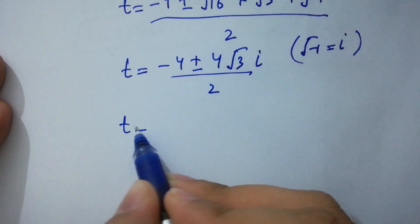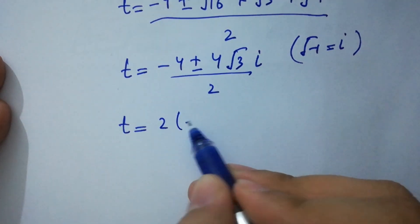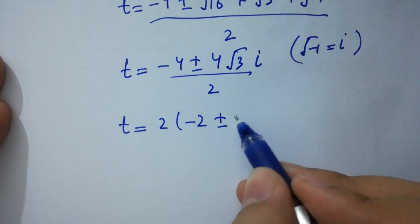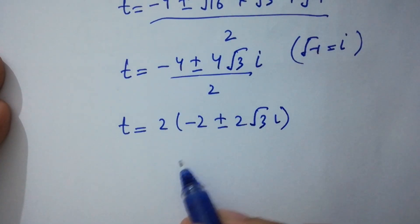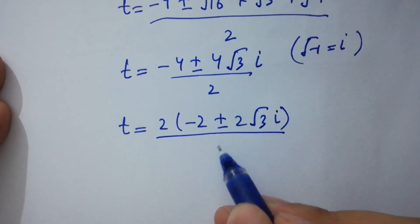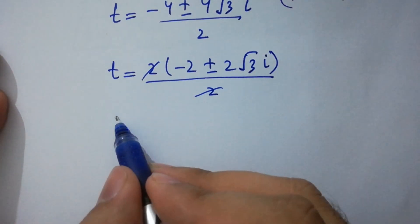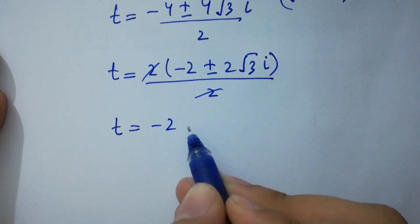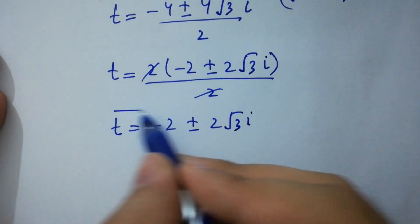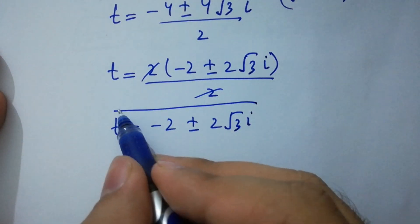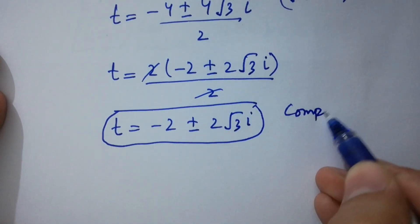So we have t equals, where 2 can be common: 2 times minus 2 plus or minus 2 square root of 3i, over 2. The 2s cancel, and we get t equals minus 2 plus or minus 2 square root of 3i, which are also the values of t — our complex solution.